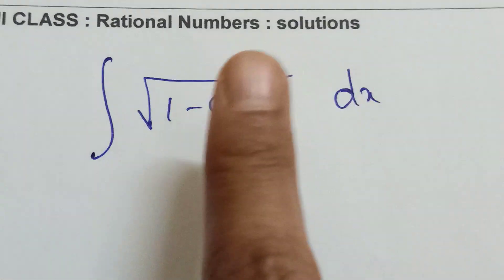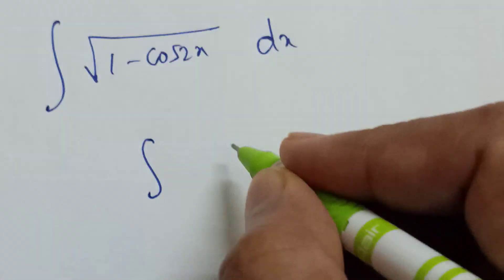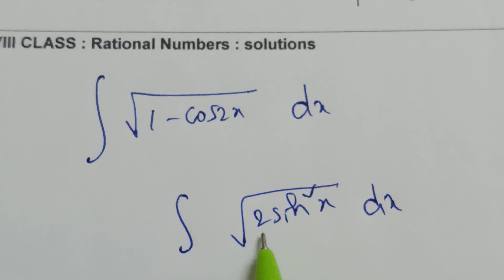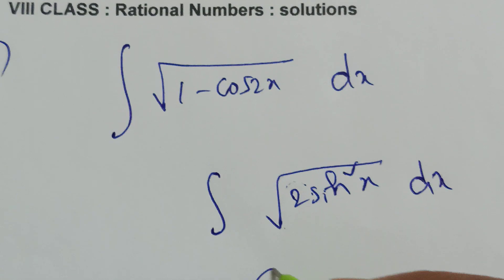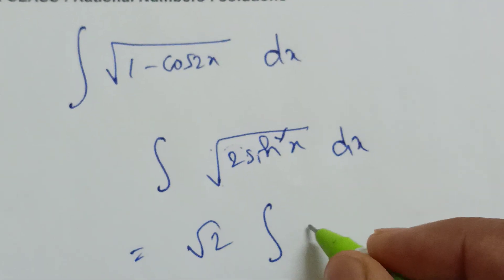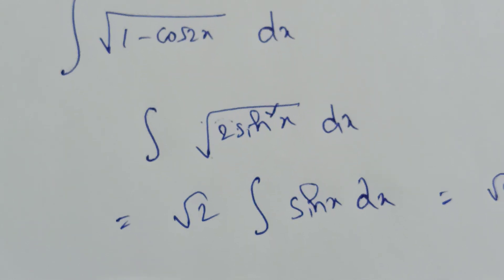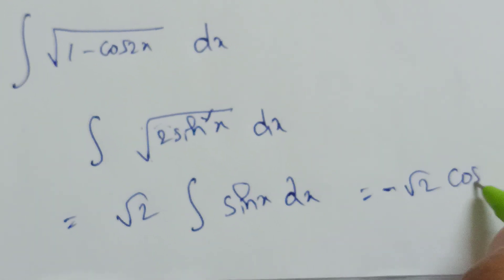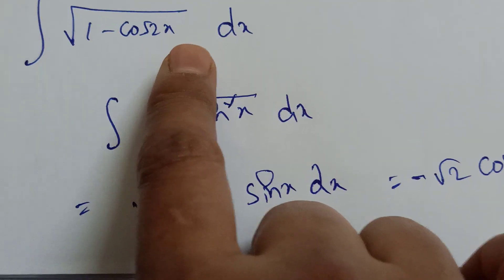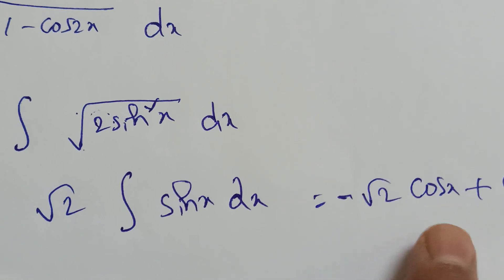Third problem: integration of √(1 - cos2x) dx. Now 1 - cos2x equals 2sin²x, so write integration of √(2sin²x) dx. The coefficient 2 comes outside as √2, and √(sin²x) = sinx. So we have √2 times integration of sinx dx. Integration of sinx is -cosx. Therefore the answer is -√2 cosx + c. Always add the constant after integration.